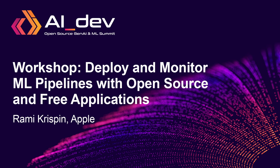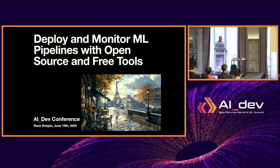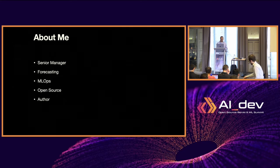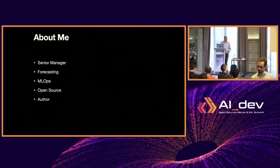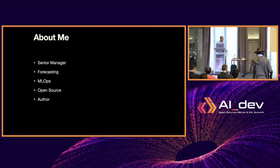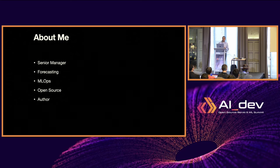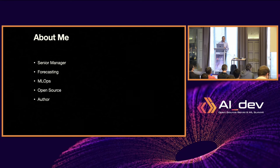My name is Rami Crispin. I'm going to talk today about deploying and monitoring machine learning pipelines with open source and free tools, mainly focusing on GitHub Actions and Docker. I'm a senior manager at Apple, managing a team of data scientists and engineers. I'm not representing anything related to Apple today — it's mainly related to my open source projects. I'm focusing on forecasting, machine learning, ML Ops, and open source.